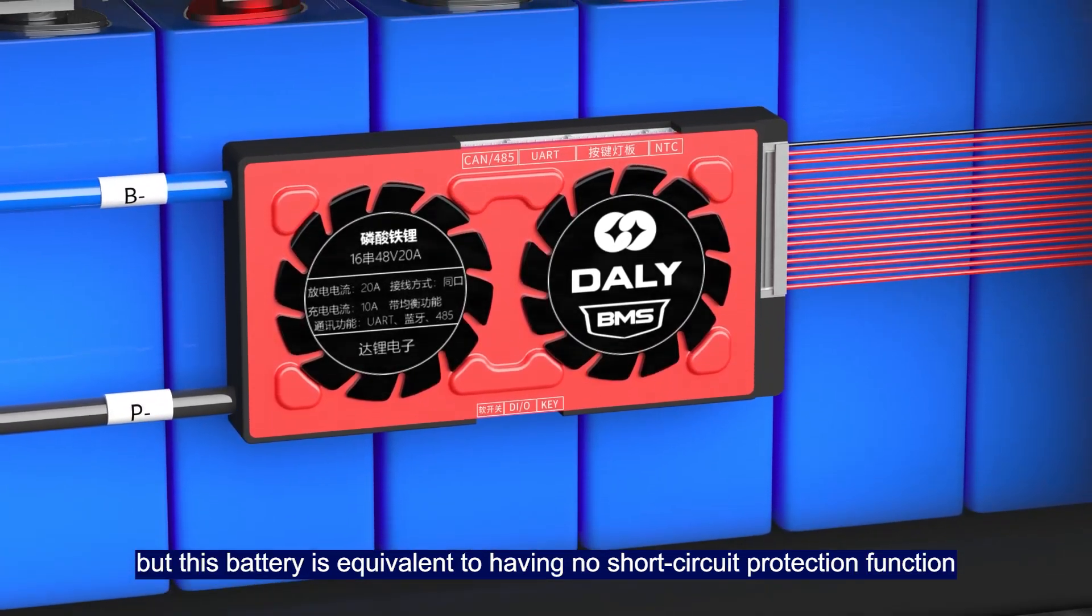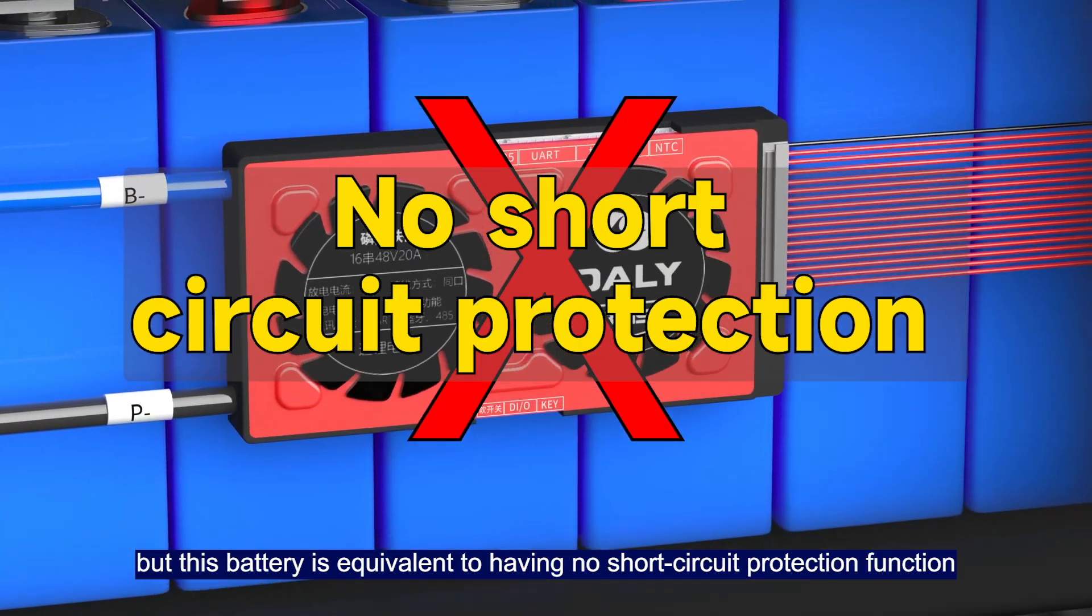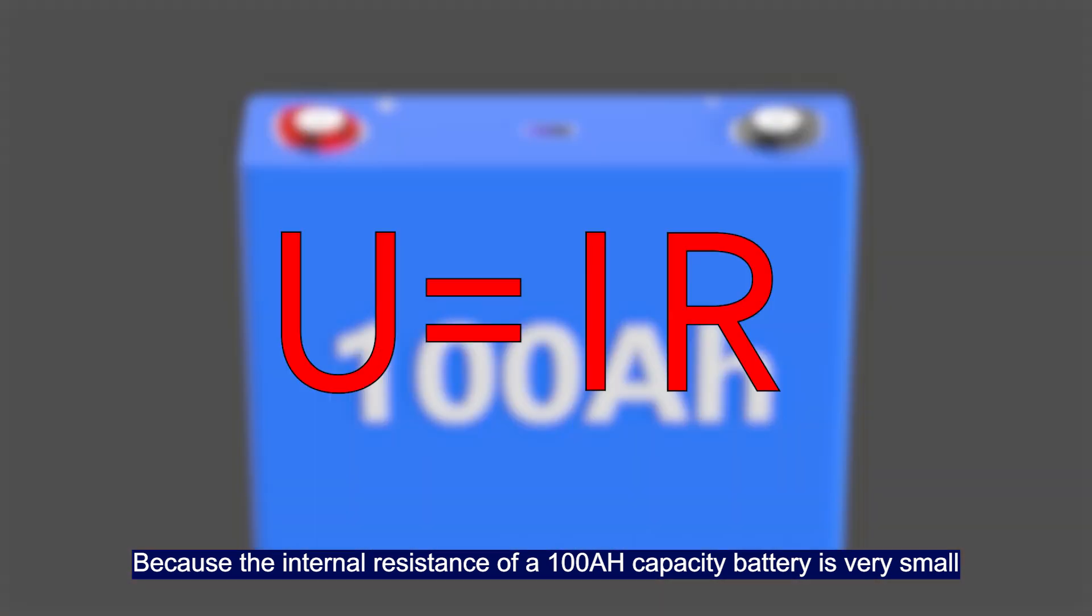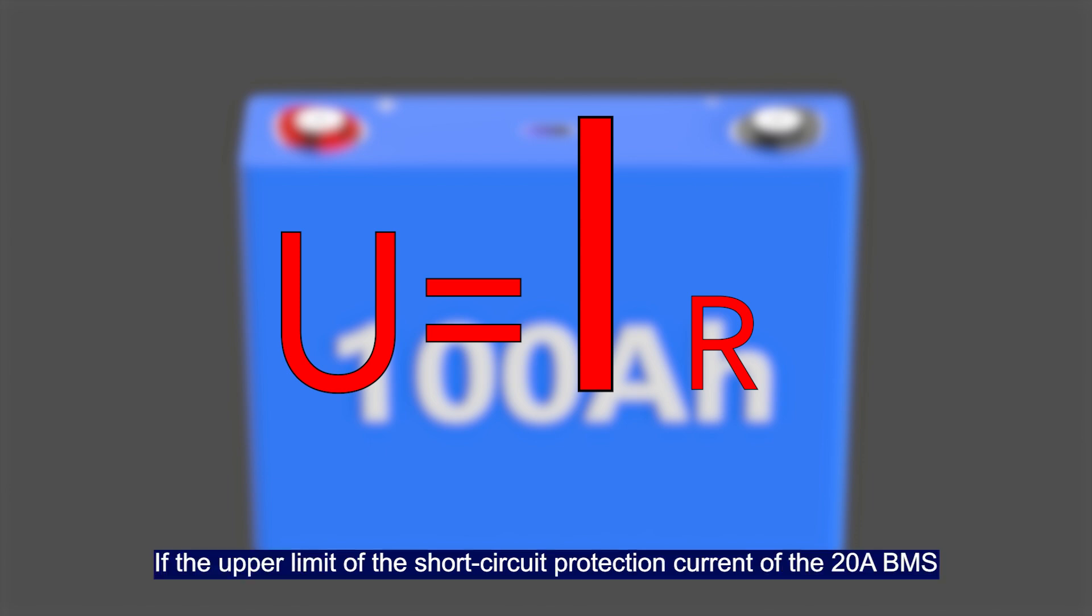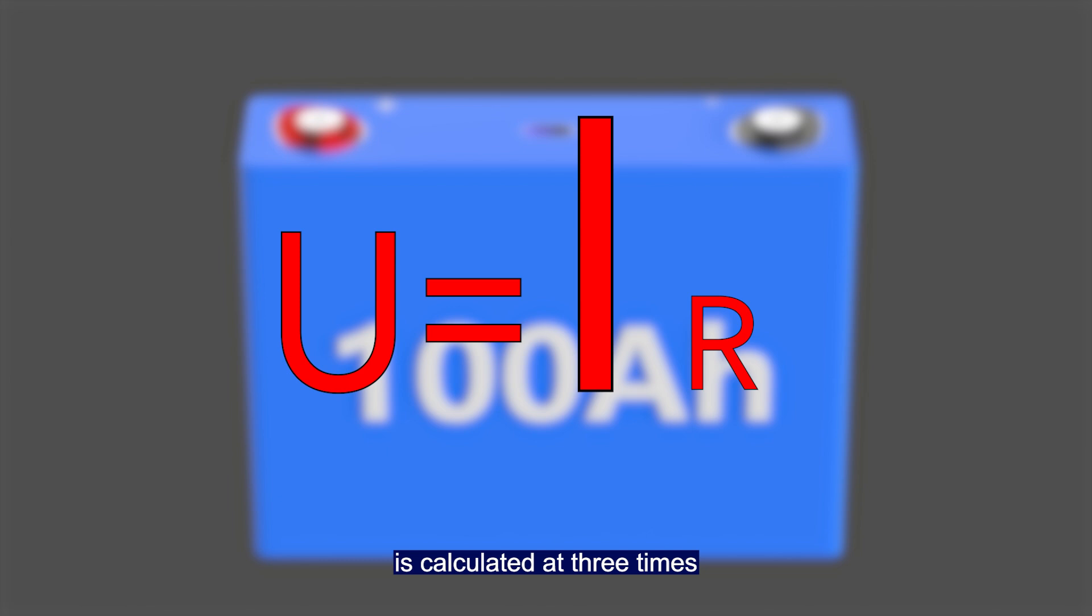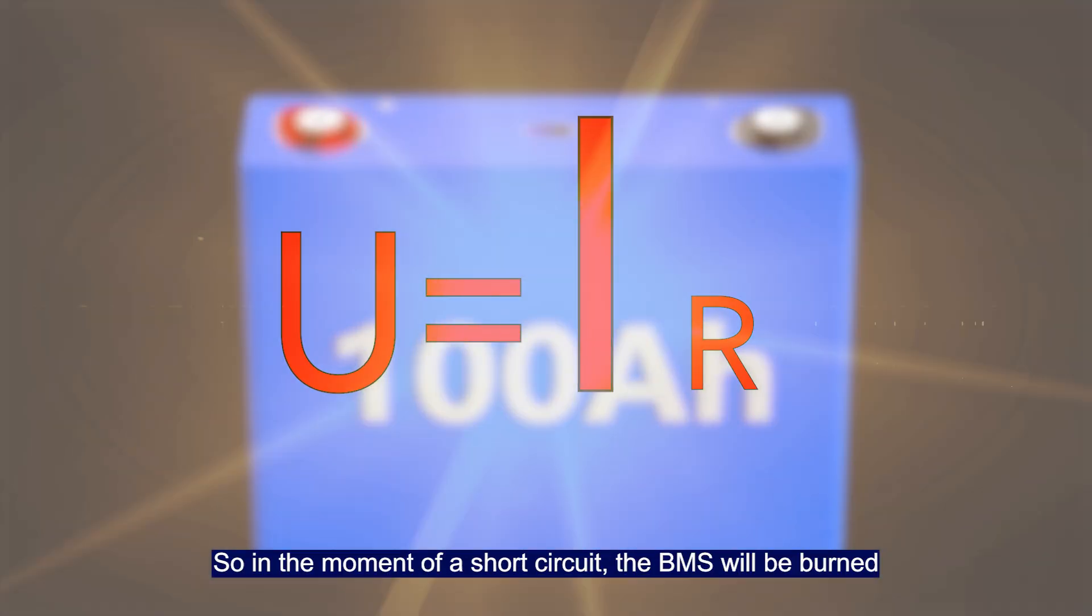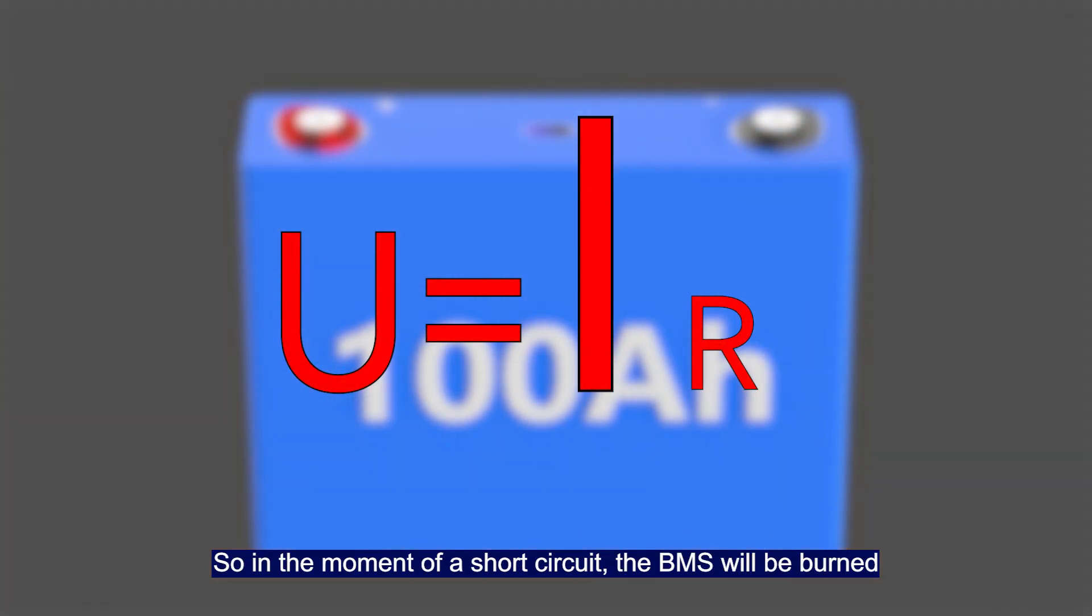But this battery is equivalent to having no short circuit protection function. Because the internal resistance of a 100Ah capacity battery is very small, the short circuit current will be very high. If the upper limit of short circuit protection current of a 20A BMS is calculated at three times, it's not yet 100A. So in the moment of a short circuit, the BMS will be burned.